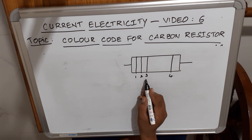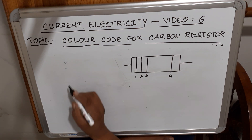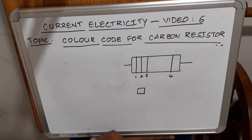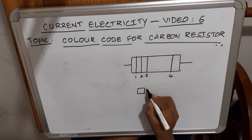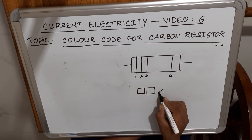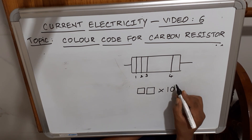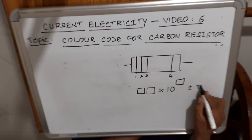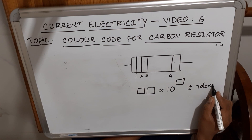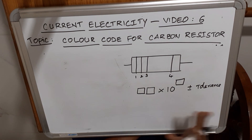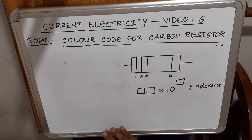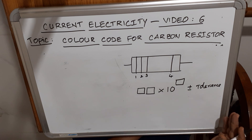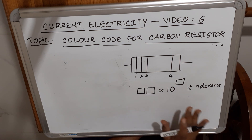The first color represents the first significant figure, the second color the second significant figure, the third color gives the power of 10, and the fourth color gives the tolerance (plus or minus). Tolerance means variation — we give a variation of ±10%, ±5%, or ±20%.